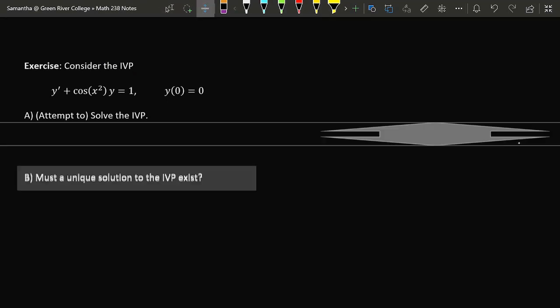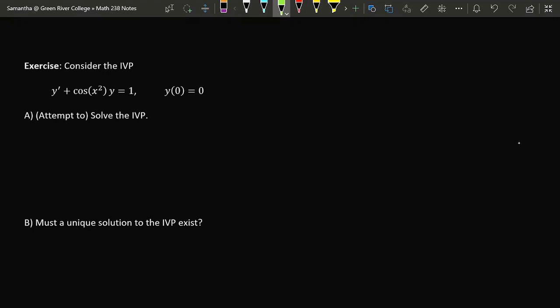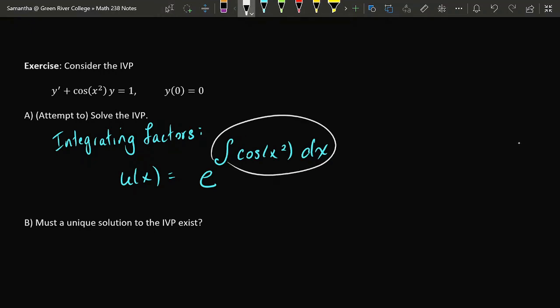To give you an example of where such a theorem might be useful, we have the IVP y' + cos(x²)y = 1, a linear first-order differential equation. Now if we were going to try to solve this differential equation, we would need to use the method of integrating factors. Which would say, the first thing that you need to do is calculate your integrating factor by taking e to the integral of cos(x²). But you are immediately blocked in your attempt to use integrating factors because cos(x²) doesn't have an antiderivative. At least not one that can be expressed using our basic functions.